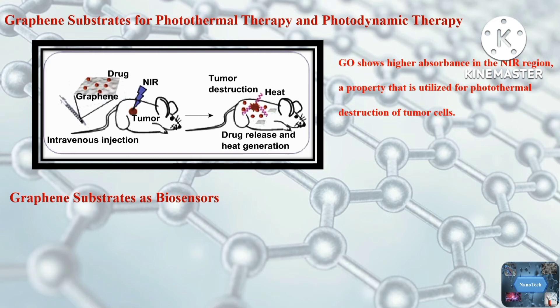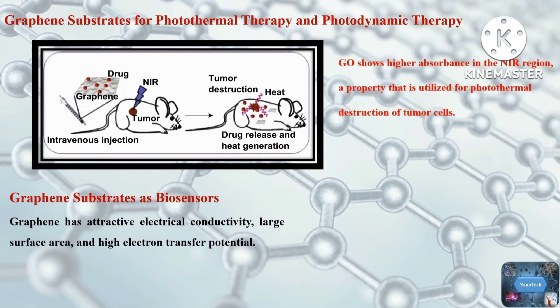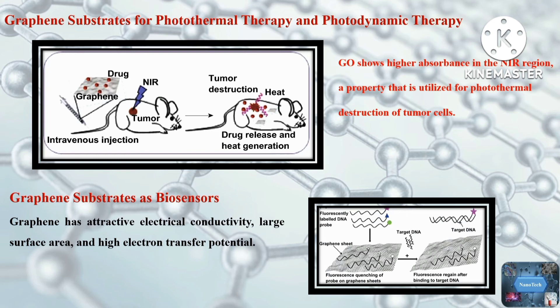Next, graphene serves as a substrate for biosensors. Graphene has attractive applications in the development of electrochemical sensors and biosensors because of its excellent electrical conductivity, large surface area, and high electron transfer potential. Graphene-based field-effect transistor biosensors have been developed to detect biomolecules such as nucleic acids, proteins, and growth factors by monitoring changes in electrical signals.